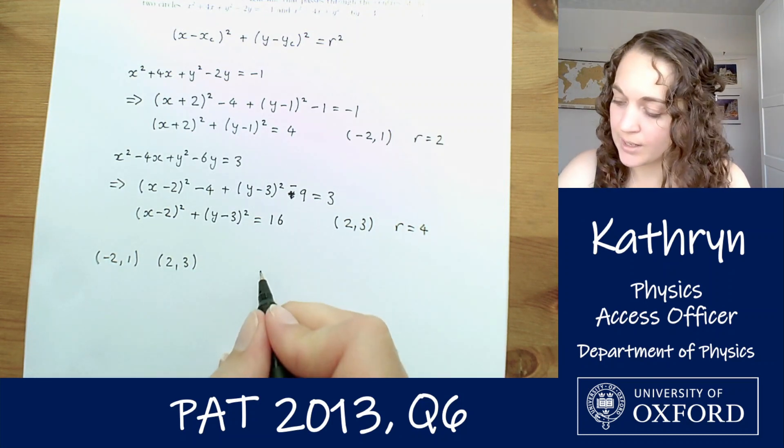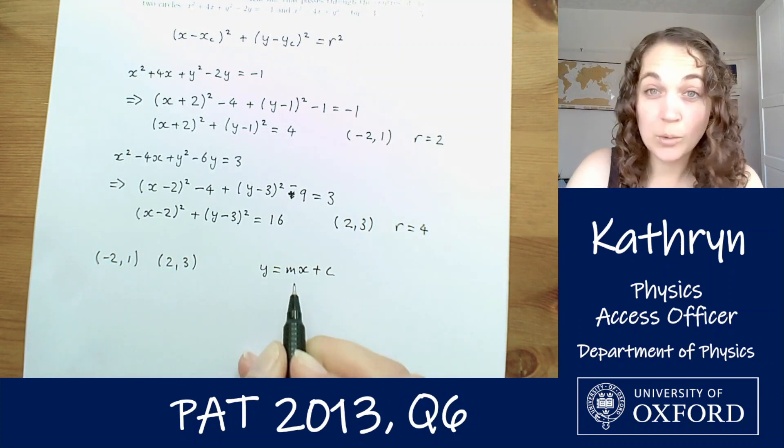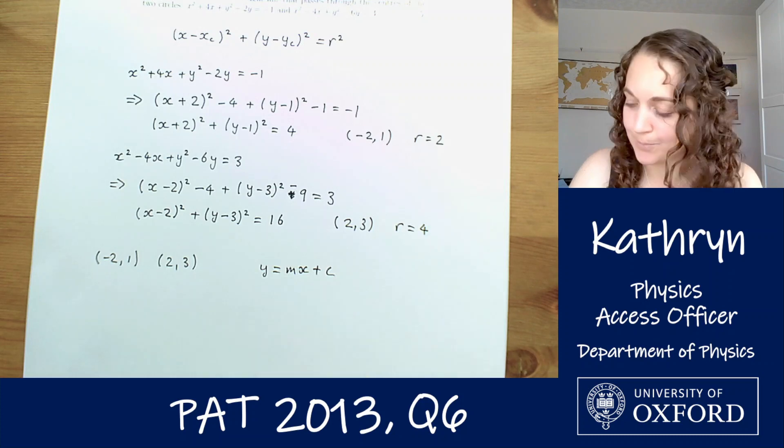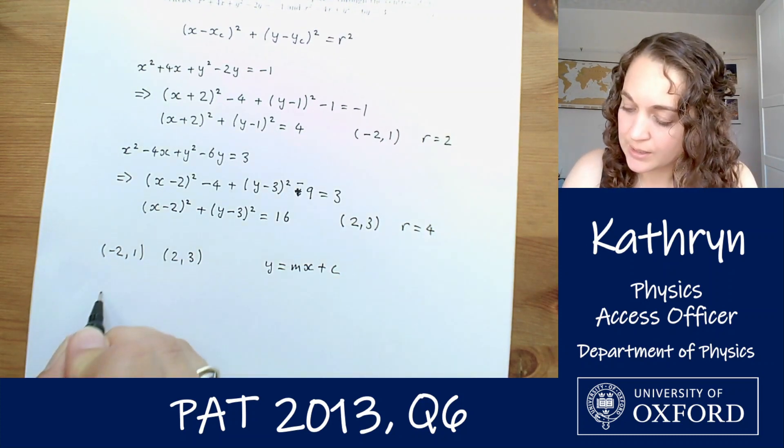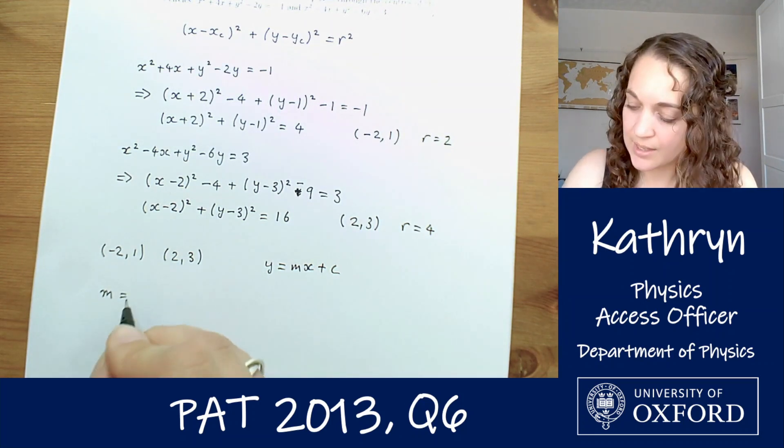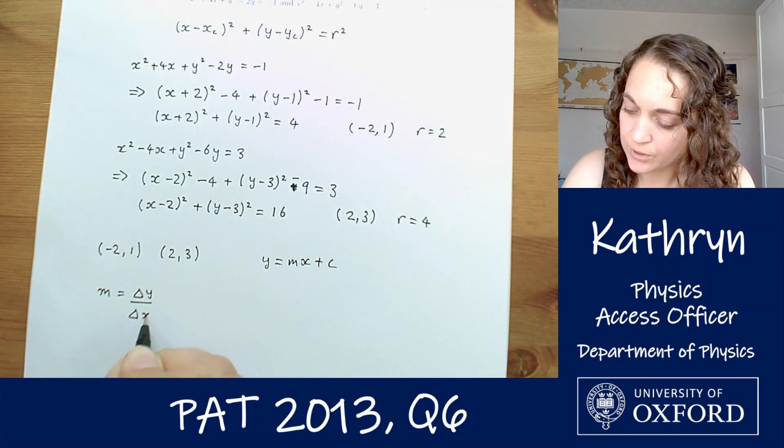Standard form of the equation of a straight line is y equals mx plus c, where m is the gradient, c is the y intercept. So first thing we're going to do is find the gradient. Gradient of a straight line is the change in y coordinates divided by the change in x coordinates.